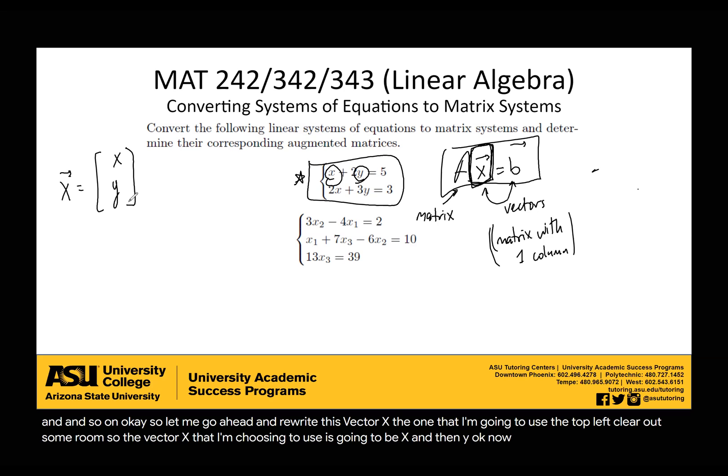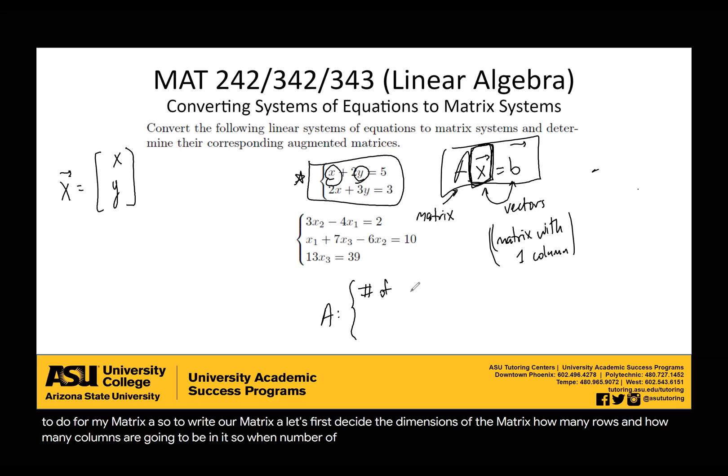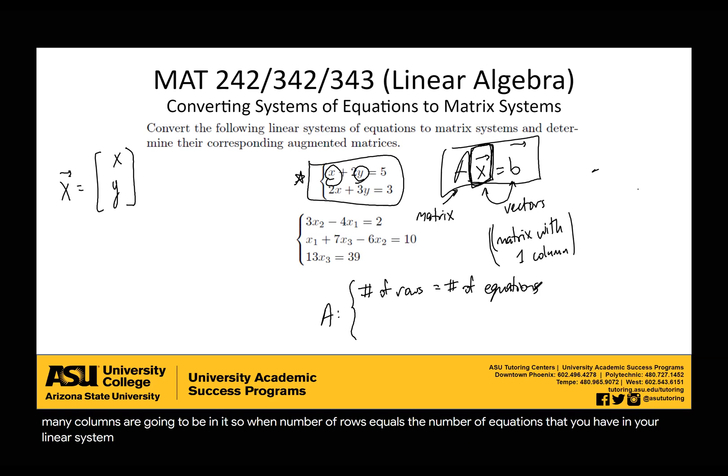Now let's figure out what I'm going to do for my matrix A. To write our matrix A, let's first decide the dimensions of the matrix, how many rows and how many columns. When constructing your matrix A, the number of rows equals the number of equations that you have in your linear system, and the number of columns equals the number of variables.